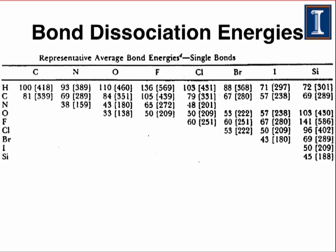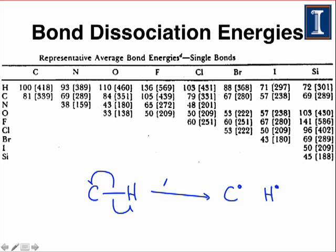You can see a table of bond dissociation energies on this slide. These energies are averages, so the numbers may vary somewhat, but they are useful benchmarks. If we think of bond cleavage as a reaction — say, a C–H bond breaking to form separated carbon and hydrogen radicals — the delta H for this process is the bond dissociation energy. For example, the C–H bond dissociation energy is about 100 kcal/mol, meaning we require an investment of 100 kcal/mol to break it homolytically. The carbon and hydrogen radicals are 100 kcal/mol higher in energy than the starting material.